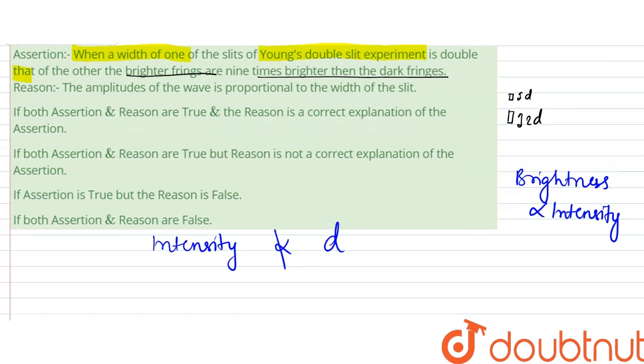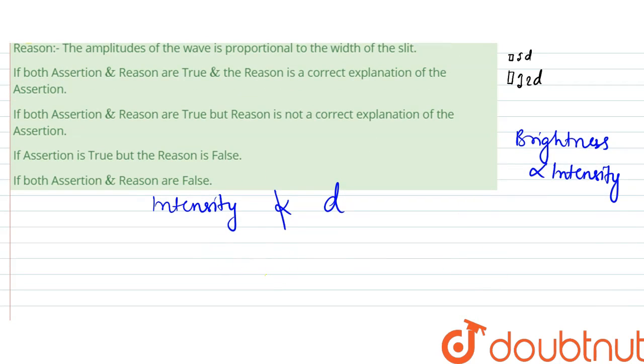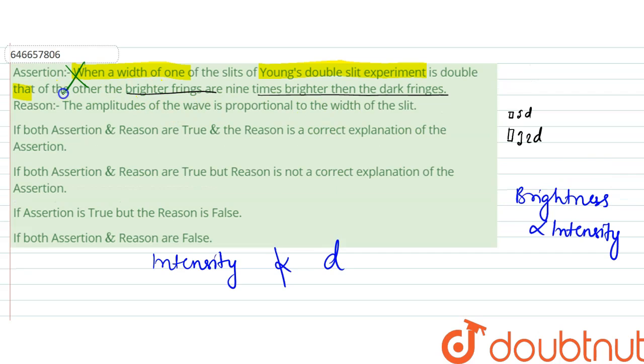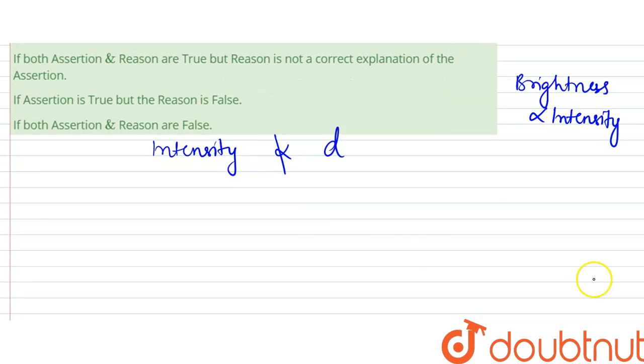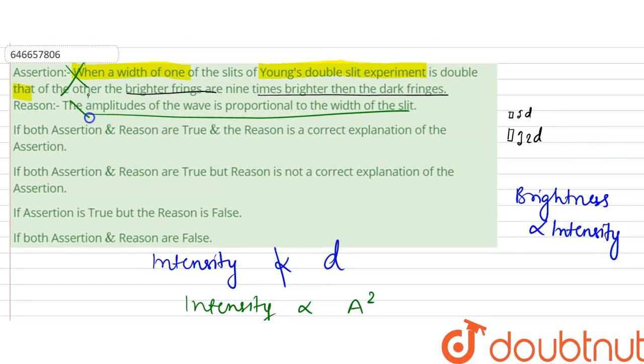Therefore, this statement is wrong. This assertion is wrong. And the amplitude of the wave is proportional to the width of the slit. Since intensity is not - intensity is proportional to amplitude square, so amplitude itself is not proportional to d as intensity is not. So this is also not correct.